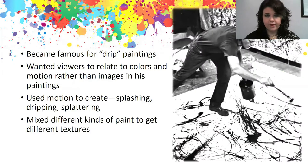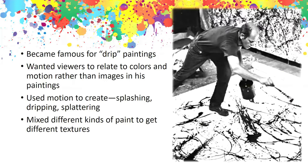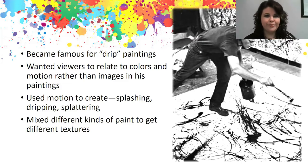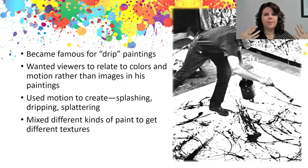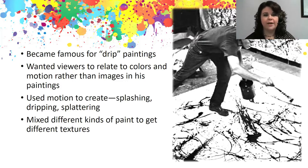He became famous for drip paintings. You can see this picture of him — he has a massive canvas and he's got a can of paint in one hand and a paintbrush in the other, just dripping and splattering paint. He wanted viewers to relate to colors and motion rather than images in his paintings, which is interesting — he didn't care so much what the painting was of, so much as the color, movement, and how that made the viewer feel. He used a lot of motion to create his paintings, splashing and dripping and splattering paint all over the canvas, and he would mix different kinds of paints to get different textures as well.